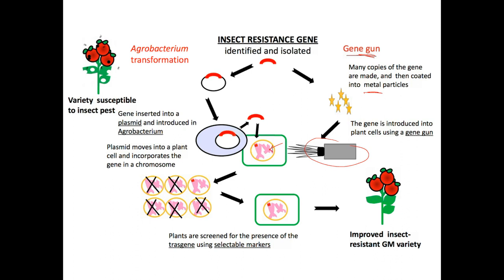More commonly, a bacterium called Agrobacterium is used. It is a bacteria that specifically infects plant cells and introduces DNA into them. What they do is take a plasmid with the gene of interest — for example, a gene for cold resistance — get it into the Agrobacterium, and allow the Agrobacterium to infect the plant cell and introduce the gene. They then pick the plant cells that express the new trait and grow them into a genetically modified plant.